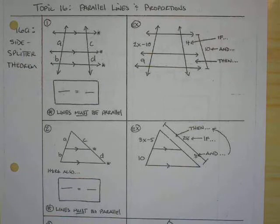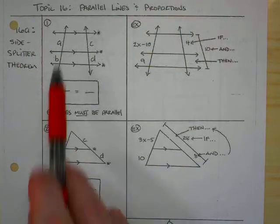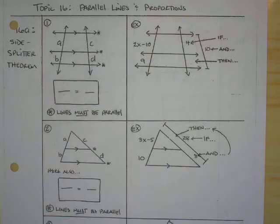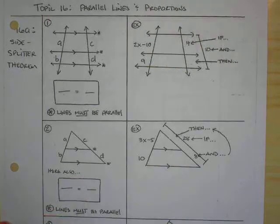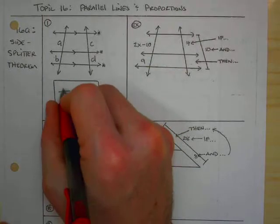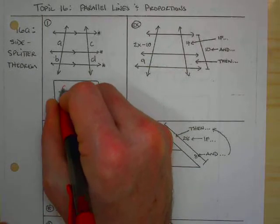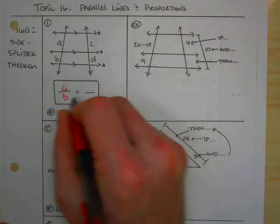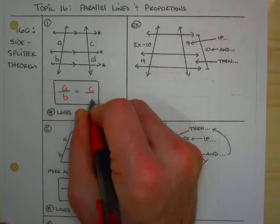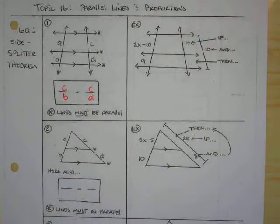If they are not parallel, it does not work. If they are parallel, however, we can see that these pairs of sides are going to be proportionally related to one another. I can set up a proportion that will define that relationship by setting A divided by B equal to C divided by D.